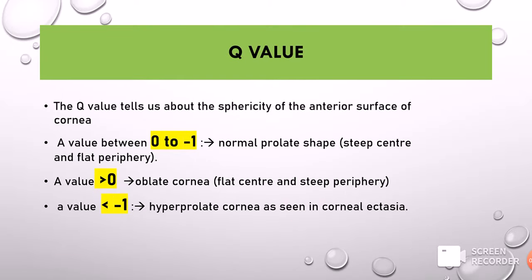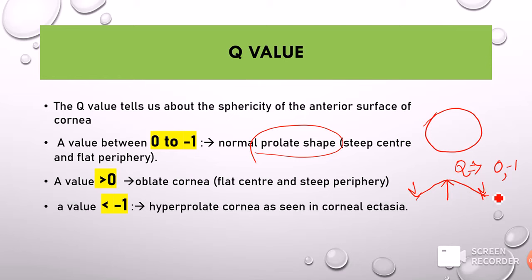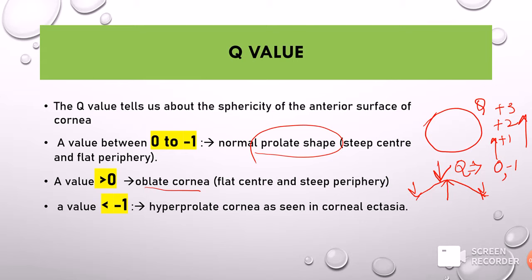Then we have the Q value, which talks about the sphericity of the anterior surface of the cornea. The cornea is not a perfect sphere; the central part is steeper compared to the peripheries, which are flatter. The normal cornea has a Q value of about 0 to minus 1 — a prolate shape, meaning steeper in the center and flatter in the periphery. When the value is more than 0, going to plus 1, plus 2, plus 3, it becomes an oblate sphere.